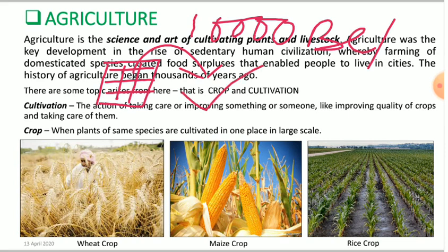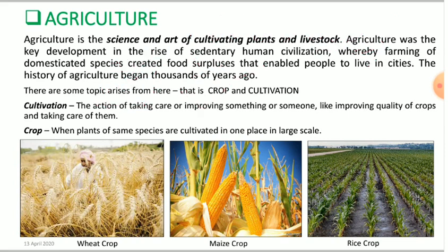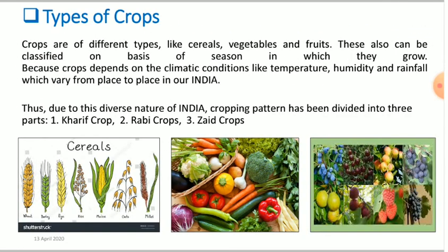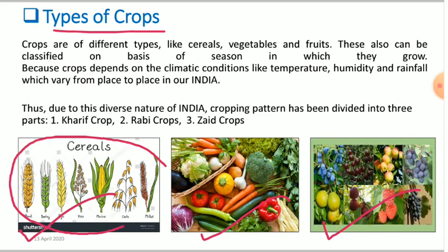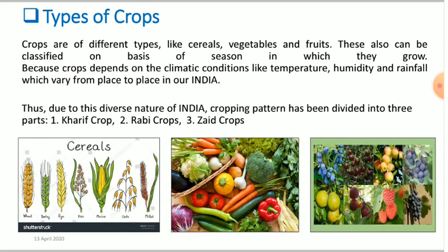The next question is: how many types of crops are there? There are three types of crops — cereals, vegetables, and fruits. In cereals we have wheat, barley, rice, maize, oats, and millet. These are some of the cereals you are already familiar with.